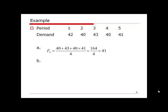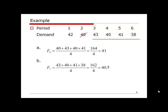Next, we calculate the demand forecast for period seven after receiving the actual demand for period six, which is 38. Now that we have period six's demand, the most recent four periods shift to period three through six. Period two is no longer included, so we remove it and use demand data from period three to period six. We apply the same calculation — add up the four numbers and divide by four — to get the demand forecast for period seven.